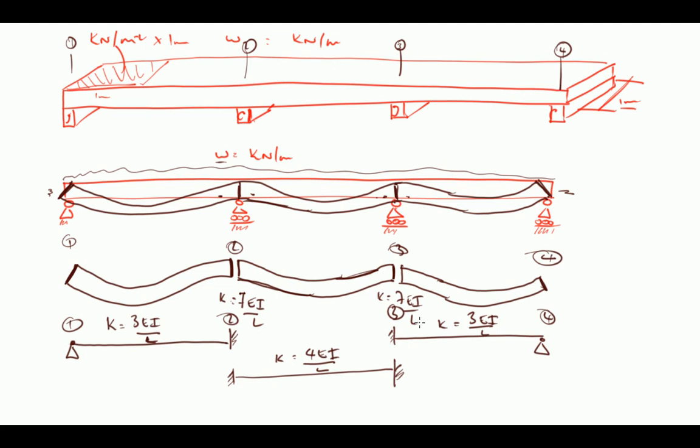The other thing we need to get from our text is that for a pinned-fixed beam end, the fixed end moment is equal to wL squared over 8. And for a fixed-fixed end, fixed end moments are wL squared over 12. Again, we're not going to prove those; we just take those from our level 4 studies and look them up in a textbook. For this one, it's a fixed end and a pinned end, so the fixed end moment for that is wL squared divided by 8.